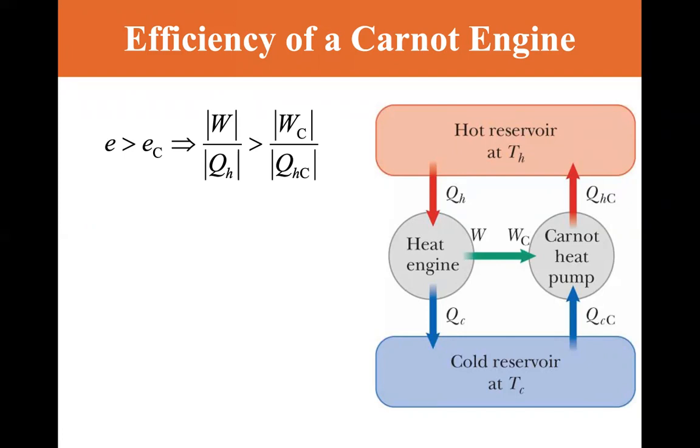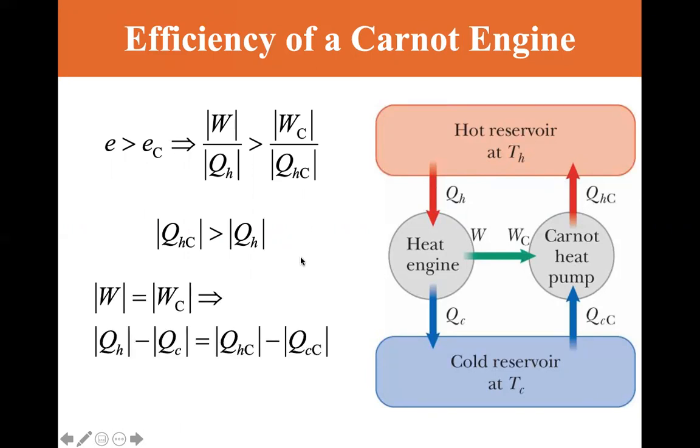And we get that the work divided by the absolute value of Q-hot is greater than that. So the work equals the work of the Carnot. You can see it's the same. So Q-hot minus Q-hot Carnot is equal to Q-hot Carnot minus Q-cold Carnot, which gives us that Q-hot Carnot minus Q-hot is equal to Q-cold Carnot minus Q-cold.